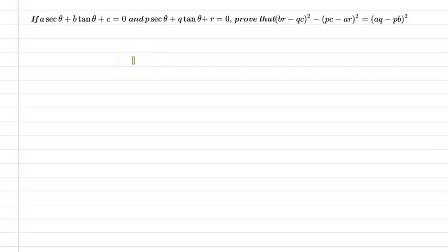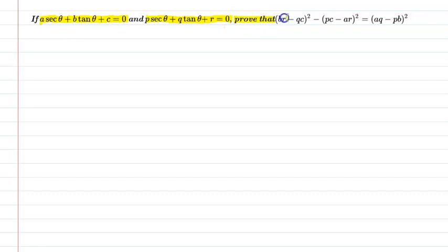Hello friends, first of all let us understand the question. The question is: if a·sec θ + b·tan θ + c = 0 and p·sec θ + q·tan θ + r = 0, then prove that (br − qc)² − (pc − ar)² = (aq − pb)².